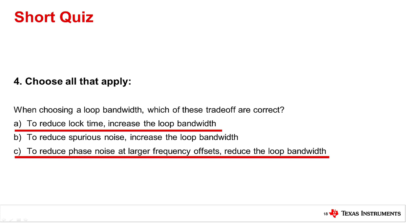Now, choice C, reduce the phase noise at larger frequency offsets. Not only will it reduce spurs at higher offset frequencies, but if you reduce the loop bandwidth, it also will reduce the phase noise at larger frequency offsets.